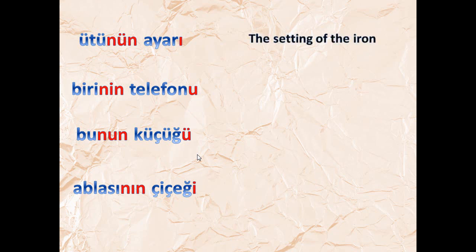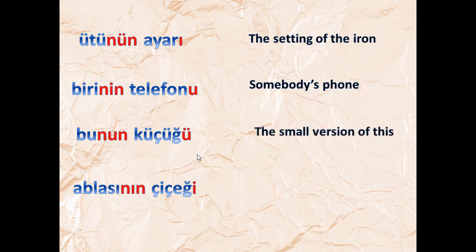'Ütünün ayarı' — the setting of the iron, like the iron used for ironing clothes. 'Birinin telefonu' — somebody's phone. 'Bunun kütüğü' — the small version of this. 'Babasının çiçeği' — her sister's flower.